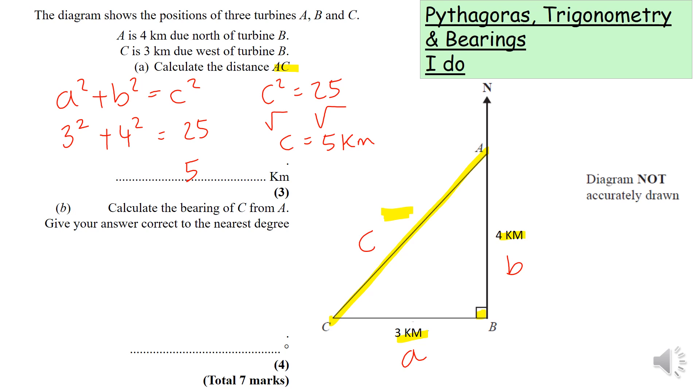Now let's look at part B. Calculate the bearing of C from A. Bearings is just a measure of a turn in a real-life context. There are three key things you need to remember about bearings: you need to put in a north line if it's not given, it's measured in a clockwise direction, and it's written as three digits.